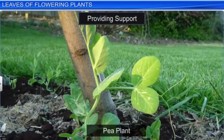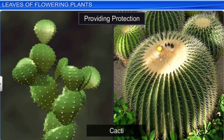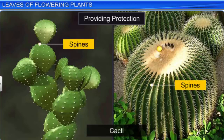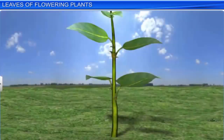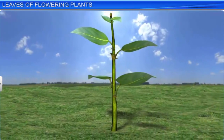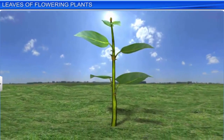In the pea plant, some leaves get modified into tendrils which help the plant to climb. Whereas in many cacti, the leaves are modified into spines for protection. Leaves therefore are an important part of a plant. Apart from carrying out the chief function of photosynthesis, they store food and provide protection and support in many plants.